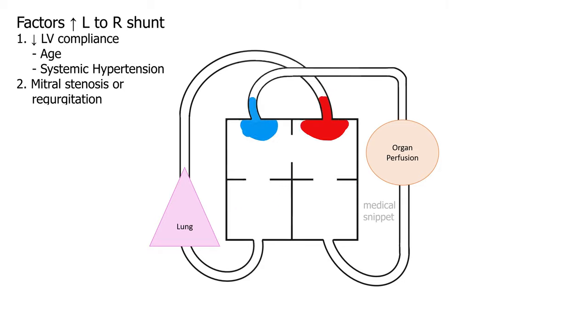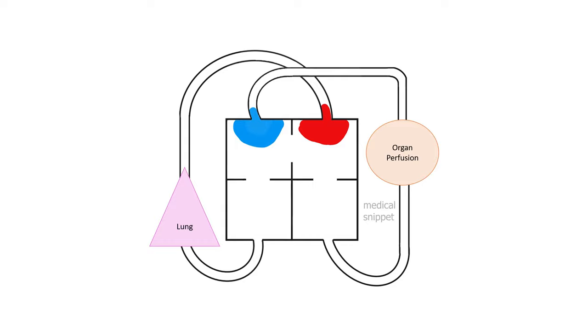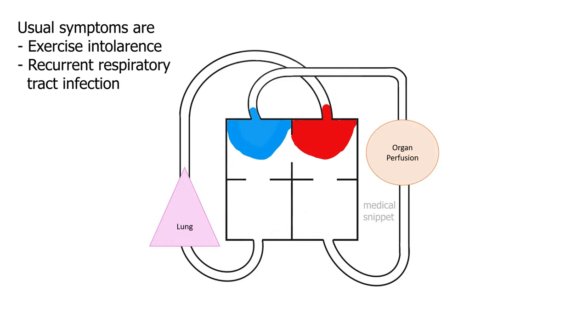Patients with associated mitral stenosis or regurgitation also have an increased left to right shunt across the defect. Patients with atrial septal defects are usually asymptomatic for several decades, but at some point they develop symptoms. The usual symptoms are exercise intolerance and recurrent respiratory tract infection due to increased pulmonary blood flow.